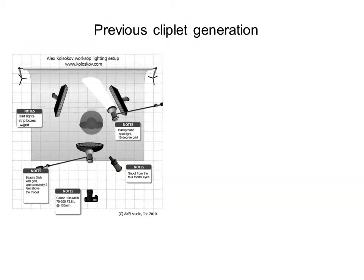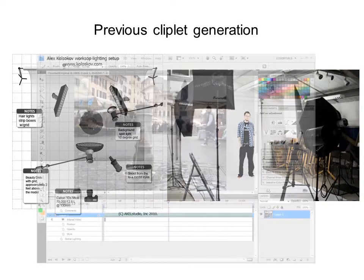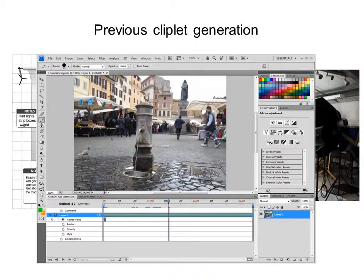To date, making cliplets has required extensive planning at both capture time and construction time. Tripods minimize shake, foreground action must be isolated from the background, and prosumer tools like Photoshop or After Effects are required to manually mask and find potentially looping regions.